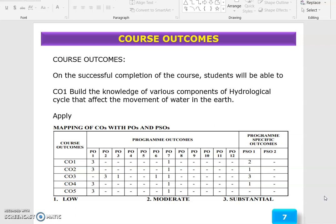The course outcome of this topic is to build the knowledge of various components of the hydrological cycle that affect the movement of water in the head. The course outcome is CO1, correlated with PO1, PO7, and program specific outcome 1.